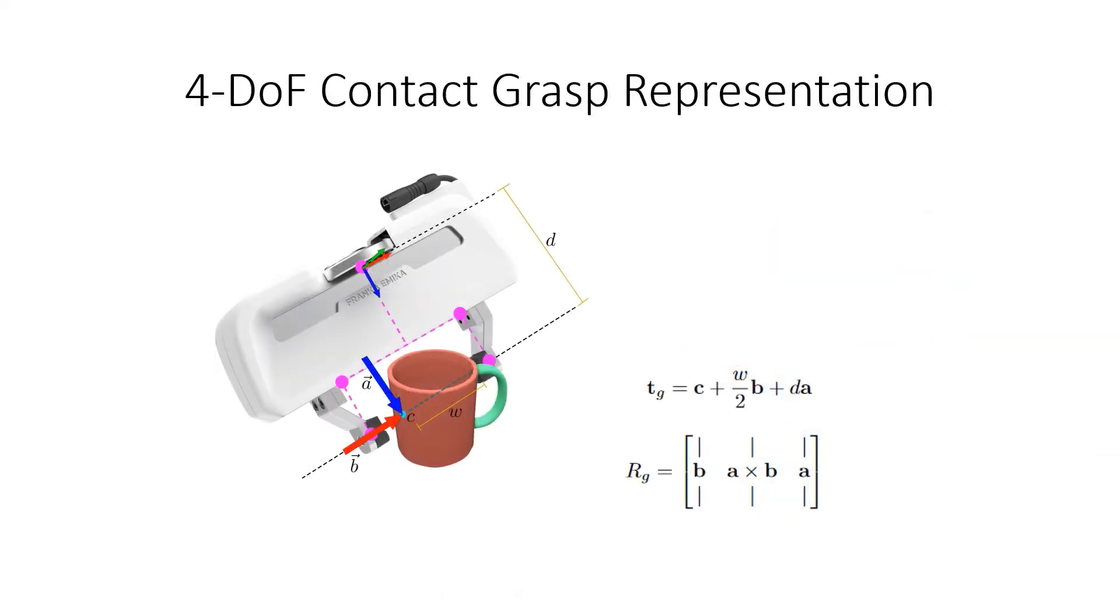Our 4DOF grasp representation is depicted below. For each successful contact C, we predict the grasp approach direction A, baseline direction B, and grasp width W. From these we can reconstruct the 6DOF grasp pose and the gripper opening, as shown to the right.